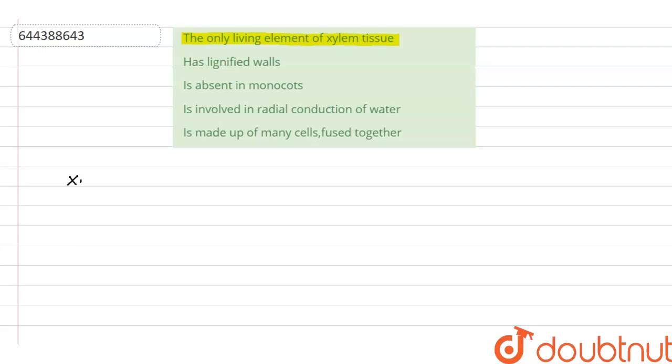So xylem is a part of our vascular tissue. It is the water conducting tissue.